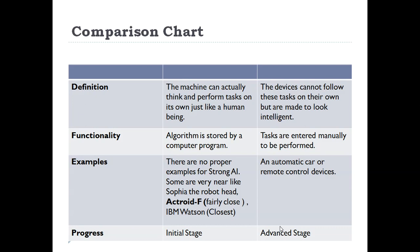In terms of examples: there are no general examples that fully follow strong artificial intelligence. There are some very close examples such as Sophia, Android F, and IBM Watson — these are very near to strong AI but not actually strong AI. For weak AI, there are a lot of examples — an automatic car, remote control devices, card games, and many other computer games. Progress-wise, we are in a very initial stage for strong AI, while for weak AI we are at a very advanced stage.